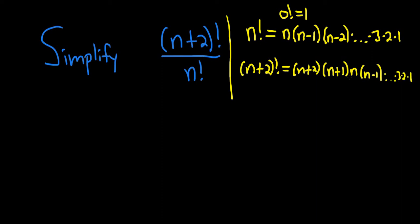So you'll notice that this piece here, the n, n minus 1, dot dot dot, 3, 2, 1, that's the same thing as n factorial, which you see up here.